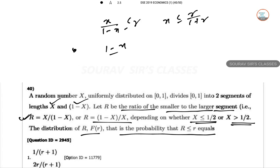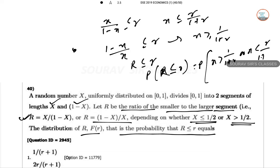And in the other case, this is r. So this provides X greater than 1/(1+r). The probability R less than r is given by probability of either X greater than 1/(1+r) or X less than r/(1+r).